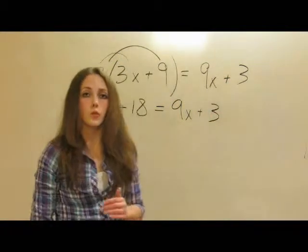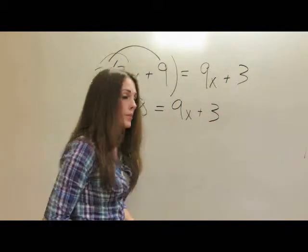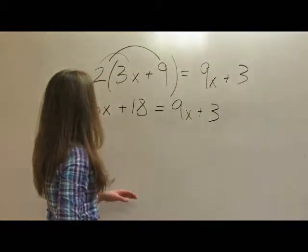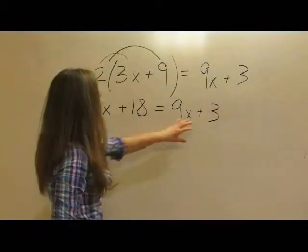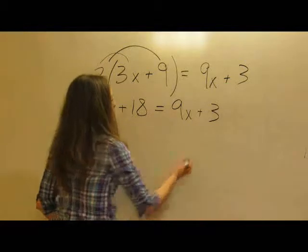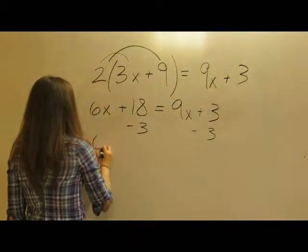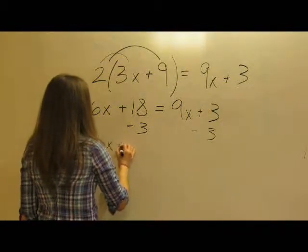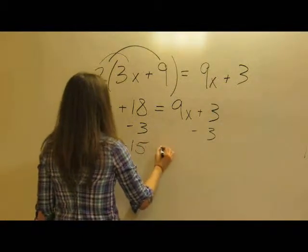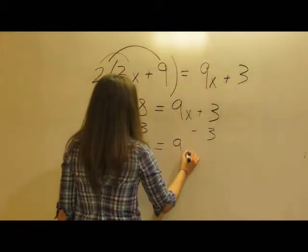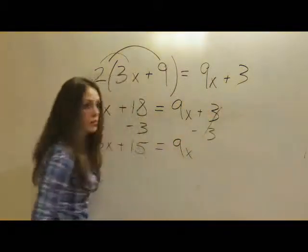Now we can work with trying to isolate x. To do that, let's get rid of the 3 here. Let's subtract 3 from both sides of the equation. That gives us 6x plus 15 equals 9x because that was cancelled out.